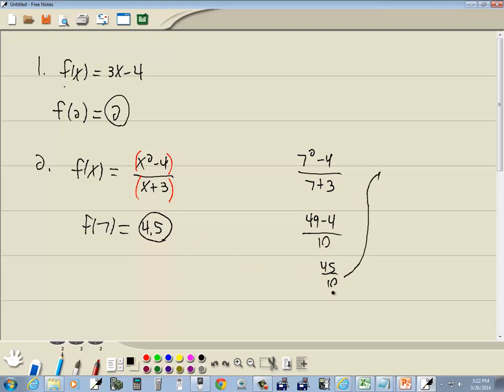This reduces. Top and bottom both of this by 5, so that gives me 9 halves. You can see there's a little bit of a problem with using the table here. It gives it to us in decimal form.